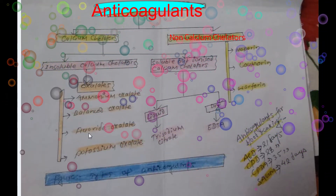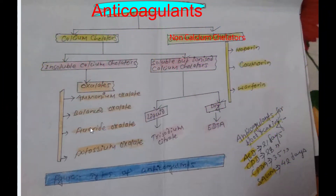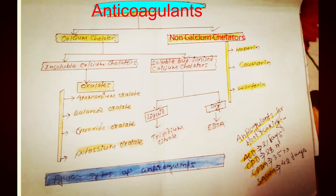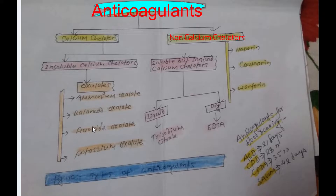Fluoride oxalate is also called sodium fluoride. It prevents glycolysis by interfering with the enzyme enolase, and is useful in sugar estimation.